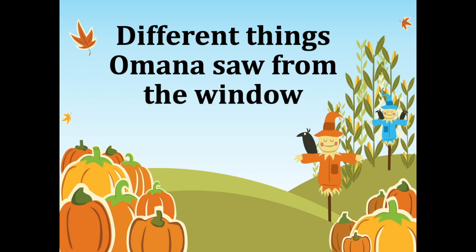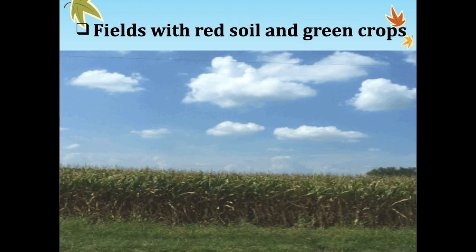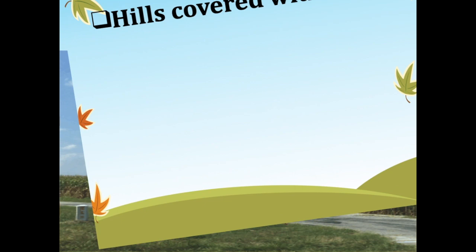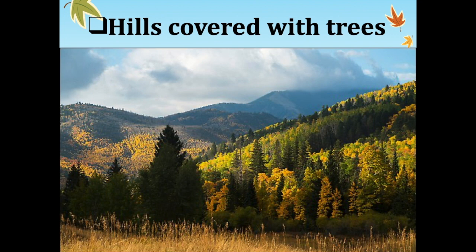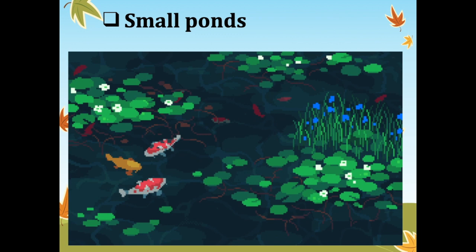Let's discuss the different things that Omana saw from the window. She saw fields with red soil and green crops. She also saw hills covered with different types of trees, and small ponds with aquatic flowers and fishes.